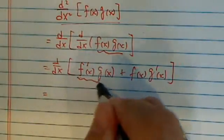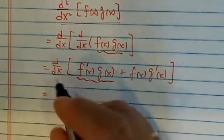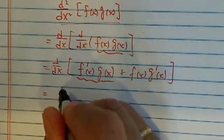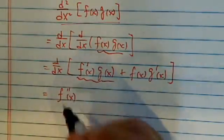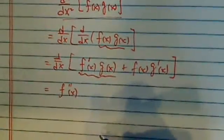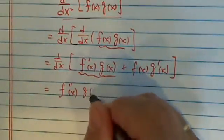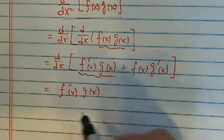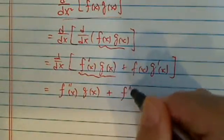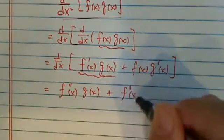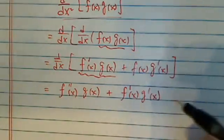Now here, to find the derivative of this one, we've got to use the product rule one more time. So the derivative of the first one, which gives the second derivative, leave the second one alone, plus leave the first one alone and take the derivative of the second one.